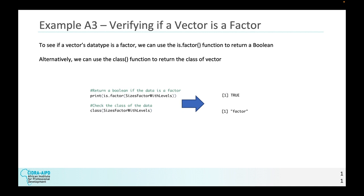So example A3, verifying if a factor is a factor. To see if a vector's data type is a factor, we can use the is.factor function to return a Boolean. As you can see down here, if we print is.factor and then we have our sizes factor with levels that we had in the previous slide, it returns true because it is a factor. Alternatively, we can use the class function to return the class of a vector. You can do this with many other data types, and it is not specific to factors. So we would do the class function. And what does it return for sizes factor with levels? It is a factor.